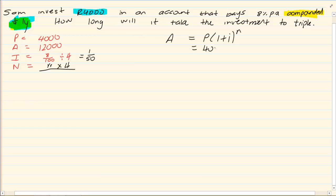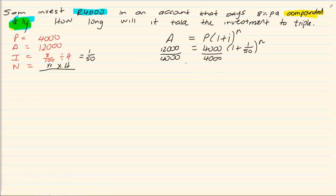Now take our standard formula. We have 4000 rand, open brackets 1 plus 1 over 50 to the power of N is equal to 12000 rand. Now I am doing algebra, dividing by 4000. So I have got 3 is equal to 51 over 50 to the power of N.